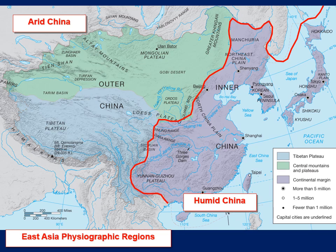Arid China or outer China is divided into two sub-physiographic regions: the Tibetan Plateau and the central mountains and plateaus. A couple of other features to point out: the Yellow River is one of the major rivers for this region, as well as the Yangtze River and the Three Gorges Dam. The Loess Plateau is also in this region, along with a series of drainage basins in the central mountains and plateaus.